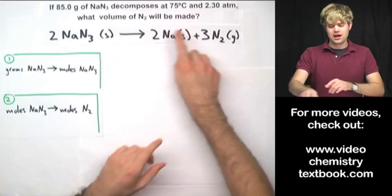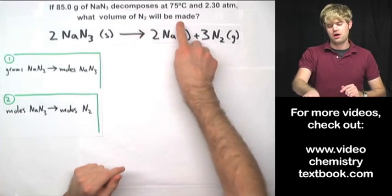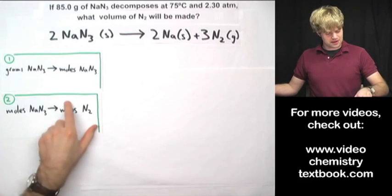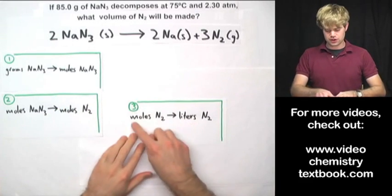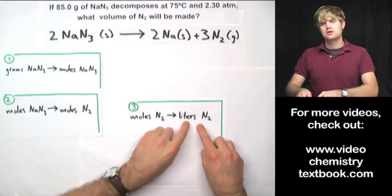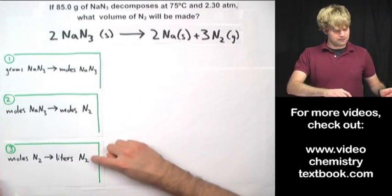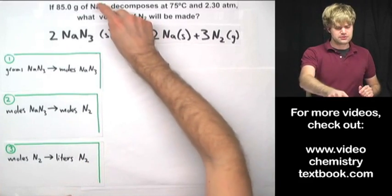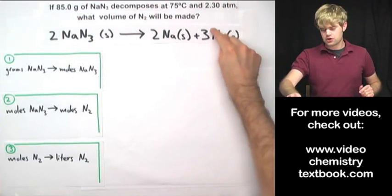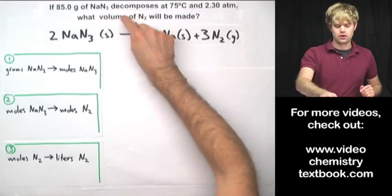The question asks not how many moles of N2 I have, but what volume of N2 will be made. So step three is to take the moles of nitrogen and convert those to liters. These are my three steps: grams of sodium azide to moles of sodium azide, moles of sodium azide to moles of nitrogen, and finally moles of nitrogen to volume of nitrogen.